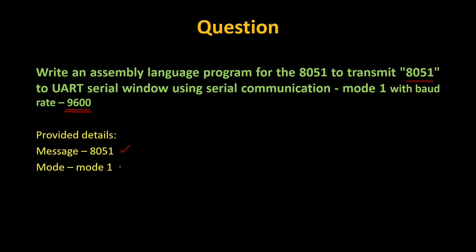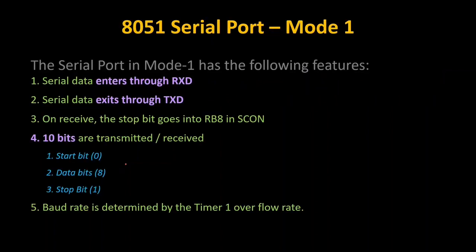Previously we understood Mode 0 in the last two experiments; this is going to be Mode 1. In Mode 1, serial data enters through RXD, serial data exits through TXD, and on receiving a stop bit, the RB8 bit in SCON is set. The baud rate is determined by Timer 1.